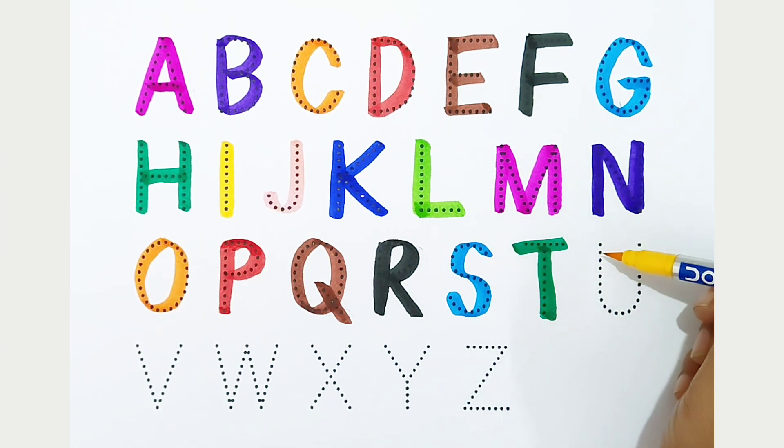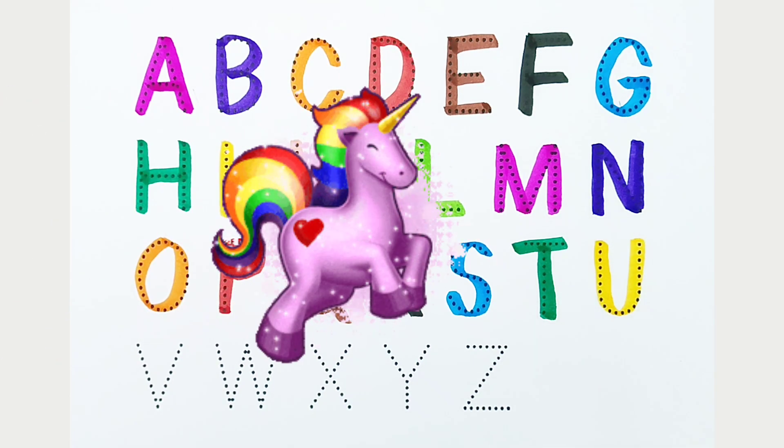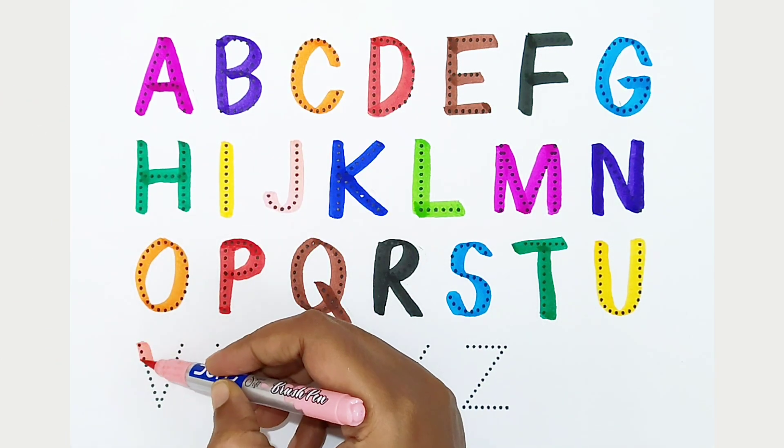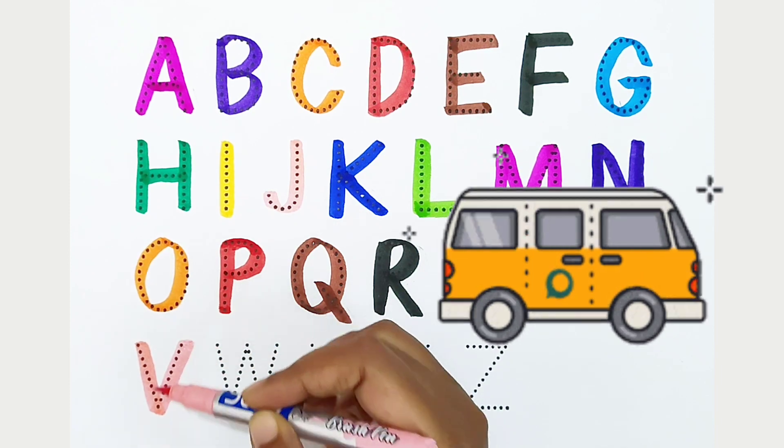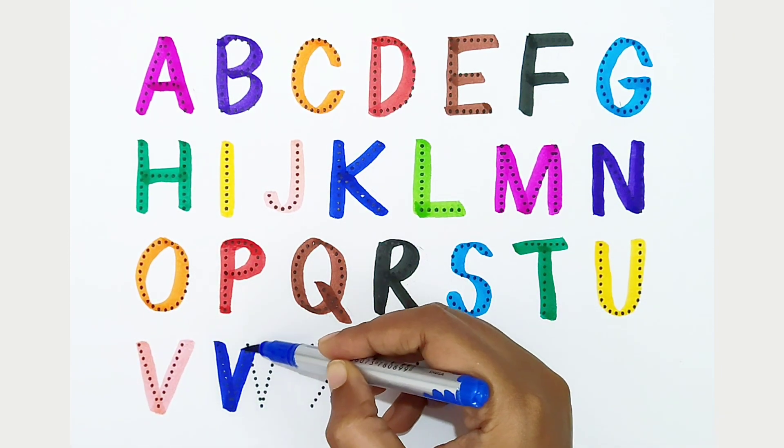U - yellow color. U is for unicorn. V - light pink color. V is for van. W - dark blue color. W is for water.